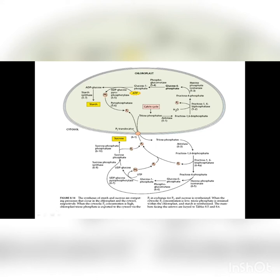A similar type of reaction takes place in the chloroplast during starch synthesis and in the cytosol during sucrose synthesis, but at the end in the cytosol we get UDP-glucose instead of ADP-glucose. This UDP-glucose combines with fructose 6-phosphate with the help of enzyme sucrose phosphate synthase. As a result, sucrose phosphate is produced. This sucrose phosphate is then converted into sucrose by enzyme sucrose phosphate phosphatase, which removes the phosphate group. This is how sucrose is synthesized in the cytosol.